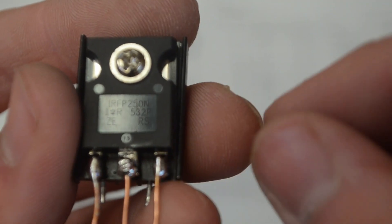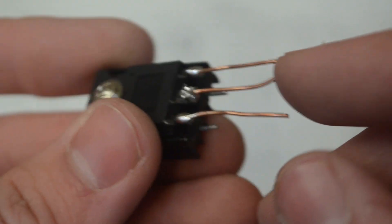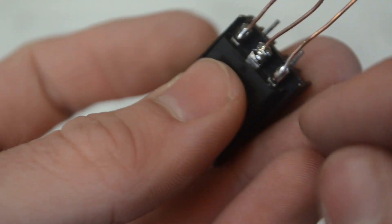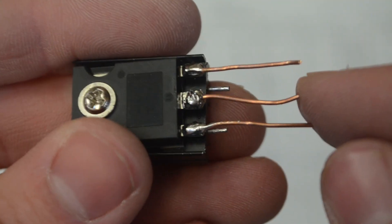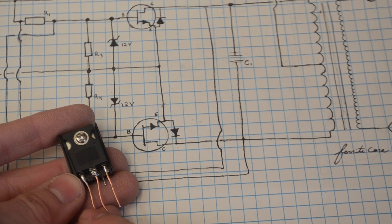Next I have two of these IRFP 250N MOSFETs. Now the reason that they look all weird at the bottom is because when I salvaged them out of something, the ends came off. So I soldered these copper wires for them to act as the terminals. Now from left to right, these transistors go gate, drain, source.